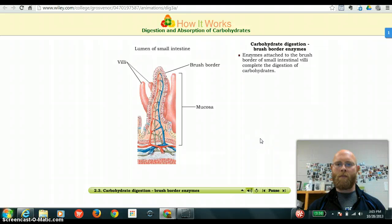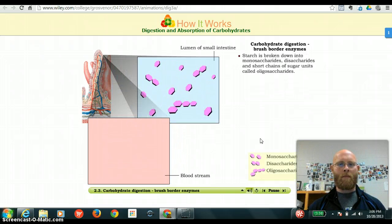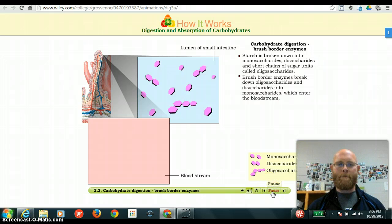Enzymes attached to the brush border of small intestinal villi complete the digestion of carbohydrates. Starch is broken down into monosaccharides, disaccharides, and short chains of sugar units called oligosaccharides. Oligosaccharides, as she calls them. The prefix oligo just means a few. Like in oligopoly, it's a company that has a few owners, more than two, but typically three to four is the max. Brush border enzymes break down oligosaccharides and disaccharides into monosaccharides, which enter the bloodstream.